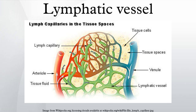Lymph capillaries are slightly larger than their counterpart capillaries of the vascular system. Lymph vessels that carry lymph to a lymph node are called the afferent lymph vessel, and one that carries it from a lymph node is called the efferent lymph vessel, from where the lymph may travel to another lymph node, may be returned to a vein, or may travel to a larger lymph duct. Lymph ducts drain the lymph into one of the subclavian veins and thus return it to general circulation.